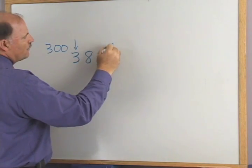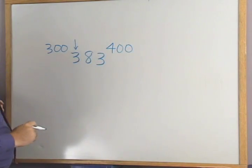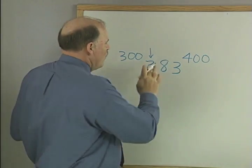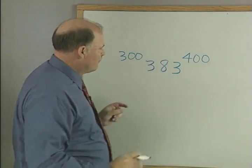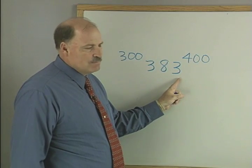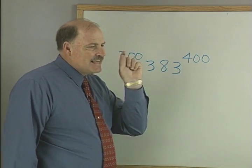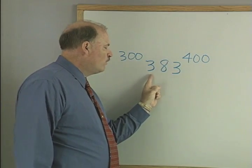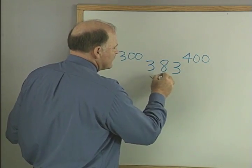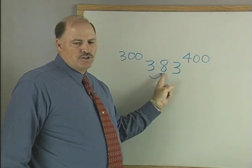400. Now the key is, we don't want to look at the three - doesn't make any difference. If I say round to the hundreds, you only look over one place to see what's this gonna do to the number.